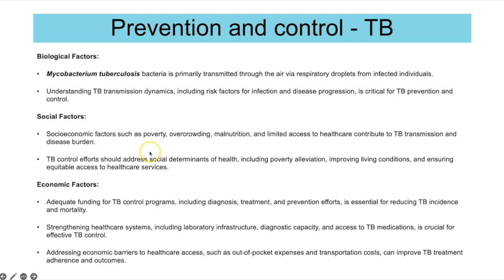Improving living conditions helps prevent and control TB transmission. On the economic side, adequate funding of TB control programs is essential — including diagnosis, treatment with antibiotics, and prevention with vaccines — to reduce the incidence of people getting the disease and dying from it. Strengthening healthcare systems, including laboratory infrastructure and diagnostic capability, will be crucial to help prevent and control TB.